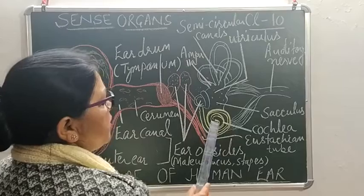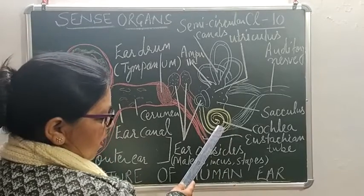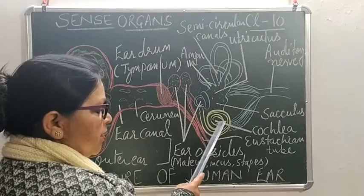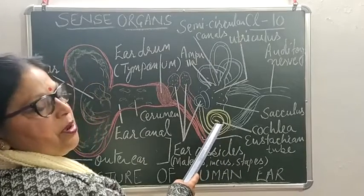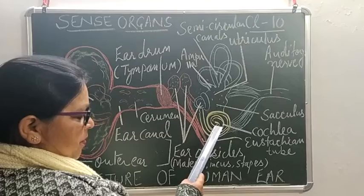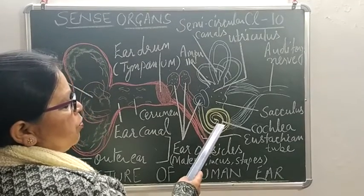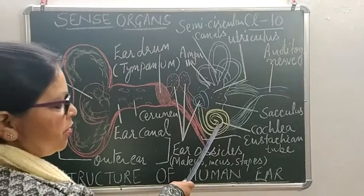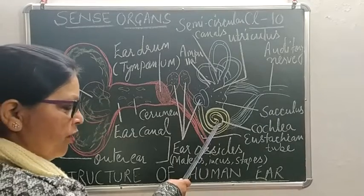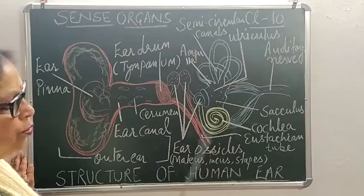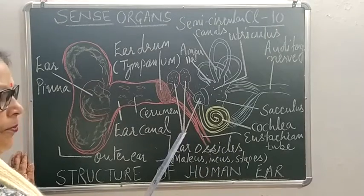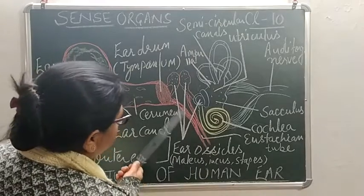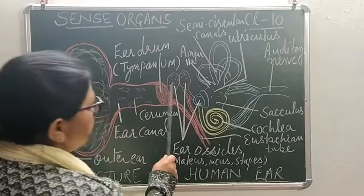The cochlea is shaped like a shell of a snail with two and a half turns. When we look at the internal structure of the cochlea — that is, if we cut a cross-section — we see that it is divided into three compartments separated by membranes. The middle compartment, called the median compartment, is filled with a fluid called endolymph, and the outer two compartments are filled with perilymph.